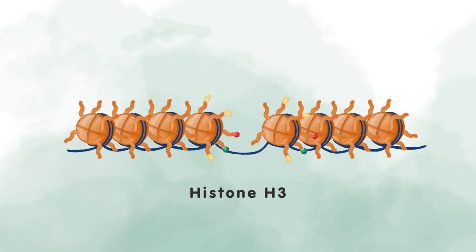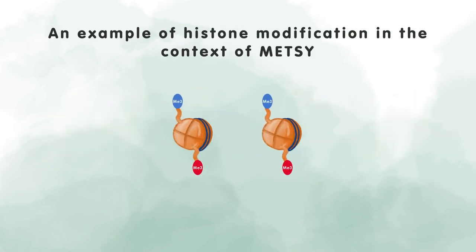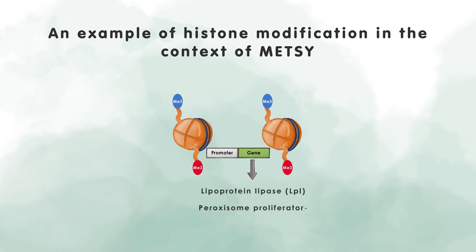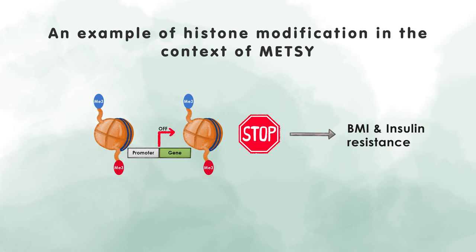Histone H3 is one of the five main histones involved in the structure of chromatin in the eukaryotic cell. In the context of the metabolic syndrome, histone H3 methylation is enriched at the promoter region of several metabolic genes in humans, including the lipoprotein lipase and the peroxisome proliferator-activated receptor gamma, or PPAR gamma. What has been shown is that histone H3 methylation leads to a reduction in the expression of those genes, which was positively correlated with body mass index and insulin resistance in patients.